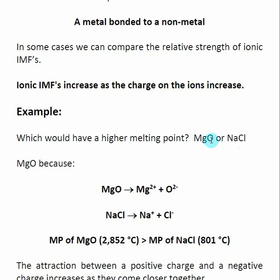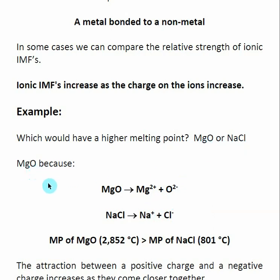What's the charge on magnesium? What's the charge on oxygen? Magnesium oxide has a +2 and a -2 ionic charge — Mg2+ and O2-. Sodium chloride has a +1 and a -1 charge — Na+ and Cl-. A +2 and -2 interaction is going to be stronger than a +1 and -1 interaction. So of these two, I would expect magnesium oxide to have the higher melting point. And indeed, magnesium oxide has a melting point of 2,852°C, whereas sodium chloride has a melting point of 801°C.